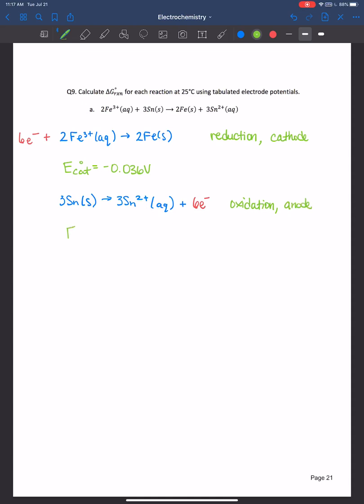You would look up the reduction potential, even though it's occurring at the anode. Don't change the sign. Just write down what's in the table. And then to calculate the cell potential for this full redox reaction taking place, remember that we learned it's cathode minus anode. So that minus sign takes care of the anode. So it's negative 0.036 volts minus negative 0.14 volts is equal to 0.104 volts.